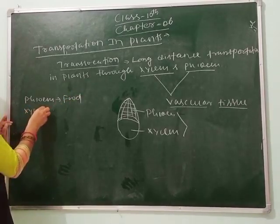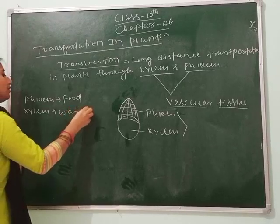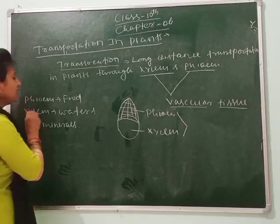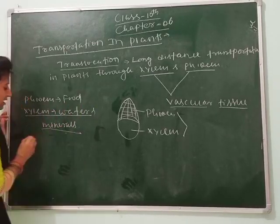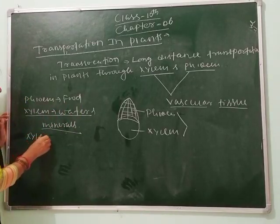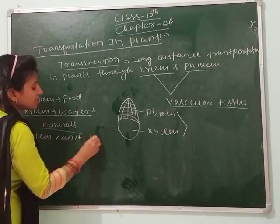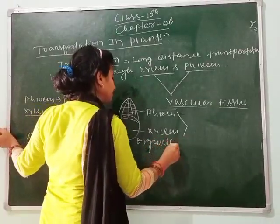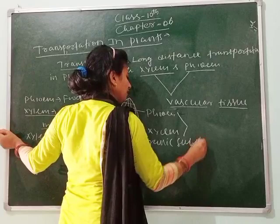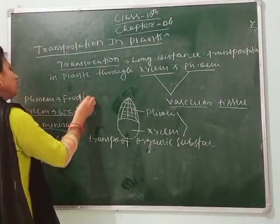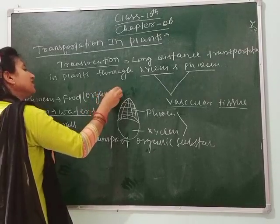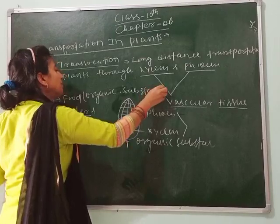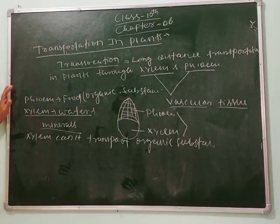Now let's see which substances are transported through vascular tissue. Phloem transports food, whereas xylem transports water and minerals. Remember: xylem cannot transport organic substances, but phloem can transport organic substances. Organic substance here means food — food produced by the plant using different minerals.